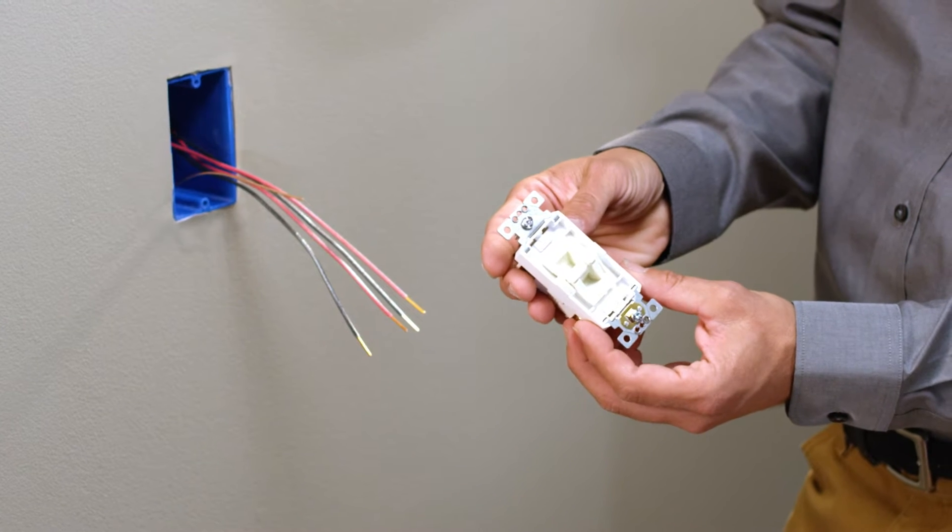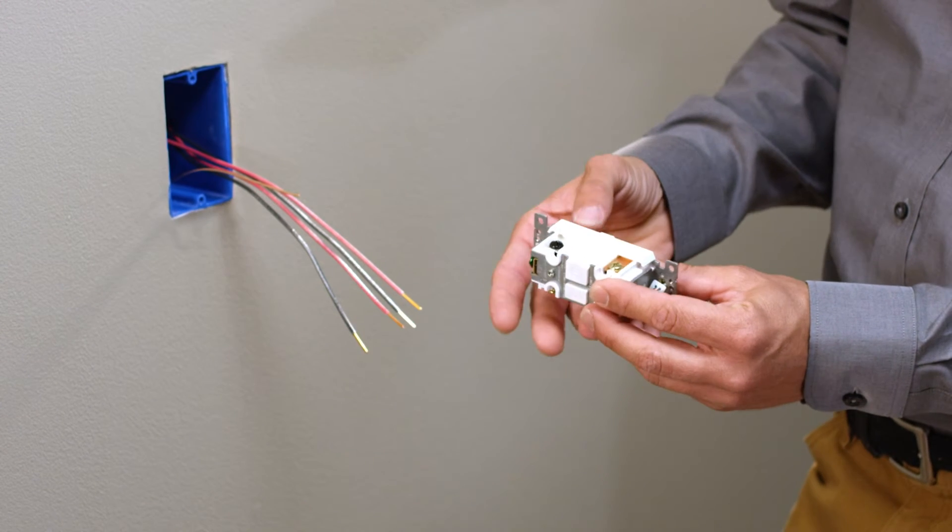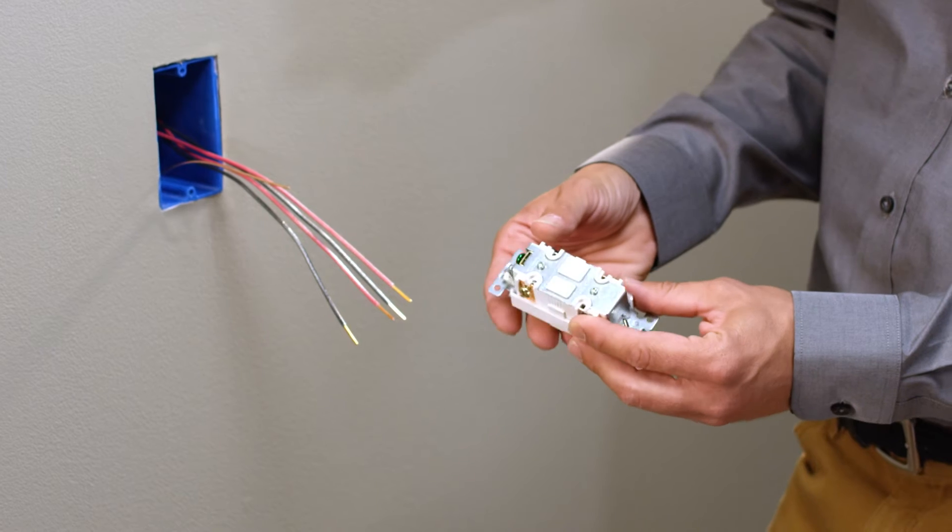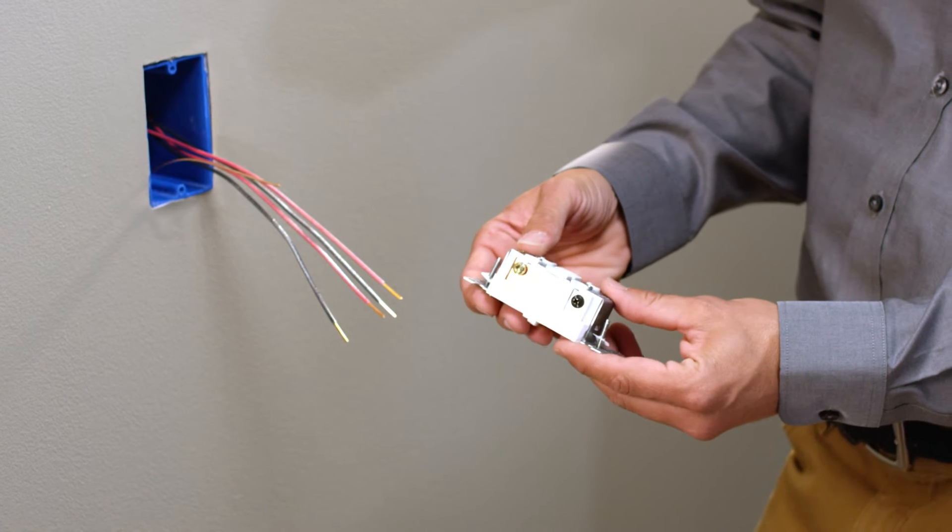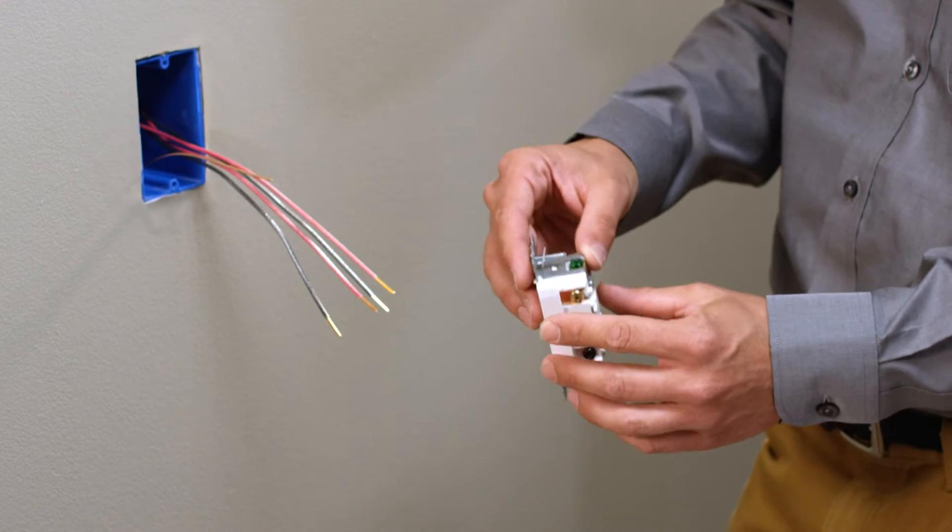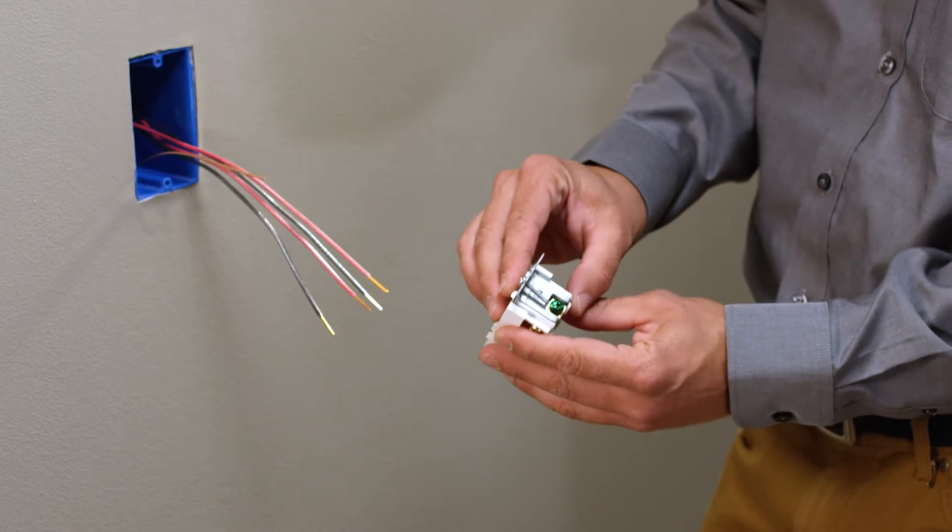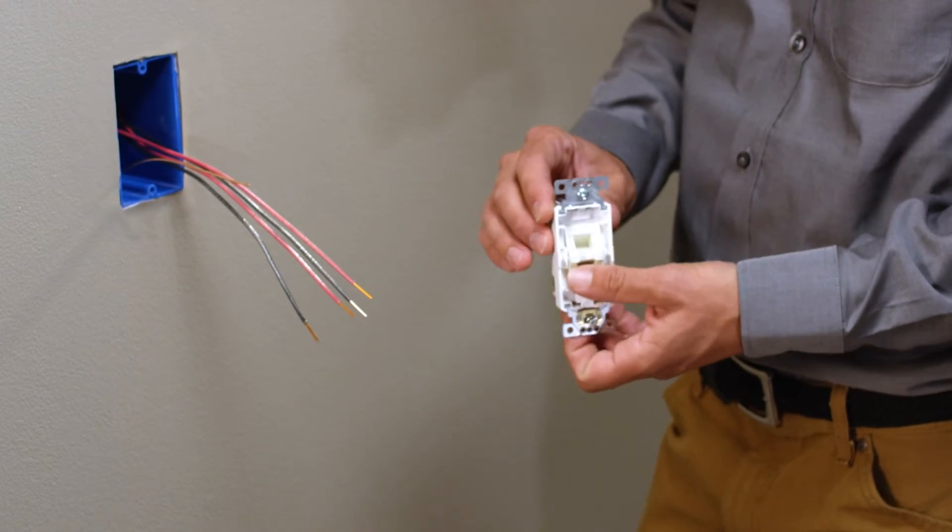A 4-Way switch has four terminal screws and a ground terminal screw. There are two terminal screws for each side of the 4-Way switch, two terminals to attach to one 3-Way switch, and the other two terminals to attach to the second 3-Way switch.